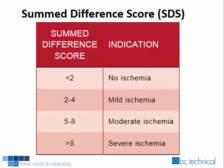The summed rest score is the summed total of each individual segment score obtained during the rest study. The summed difference score, which indicates the amount of ischemia and the degree of defect reversibility, is the difference between the summed stress score and the summed rest score.